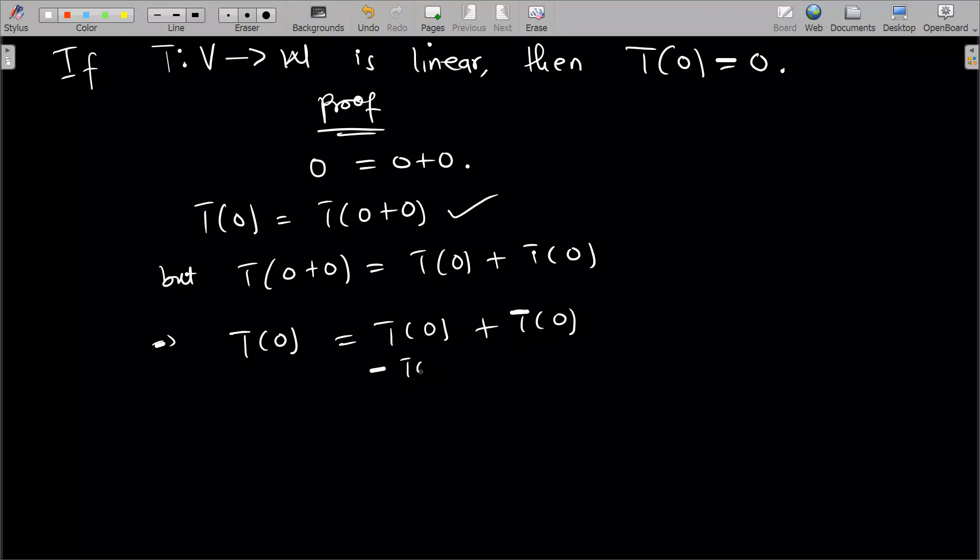Now, let me subtract T(0) from both sides. All right. Now, T(0) - T(0) is equal to T(0) because if I subtract, I'm going to be left with one of these.